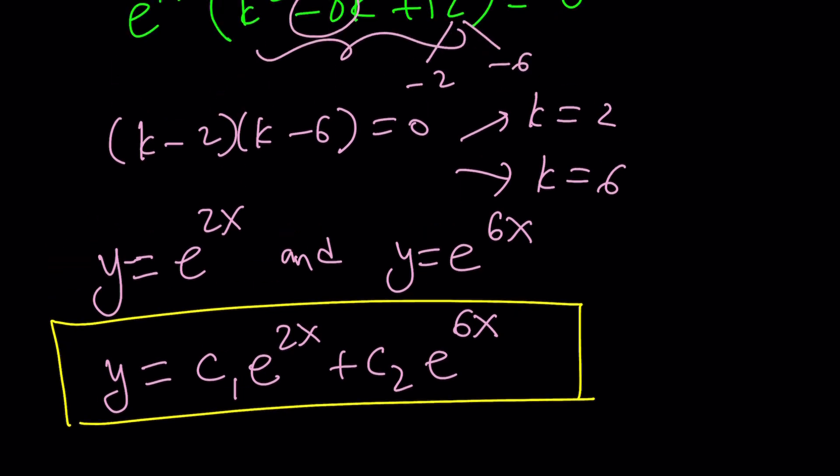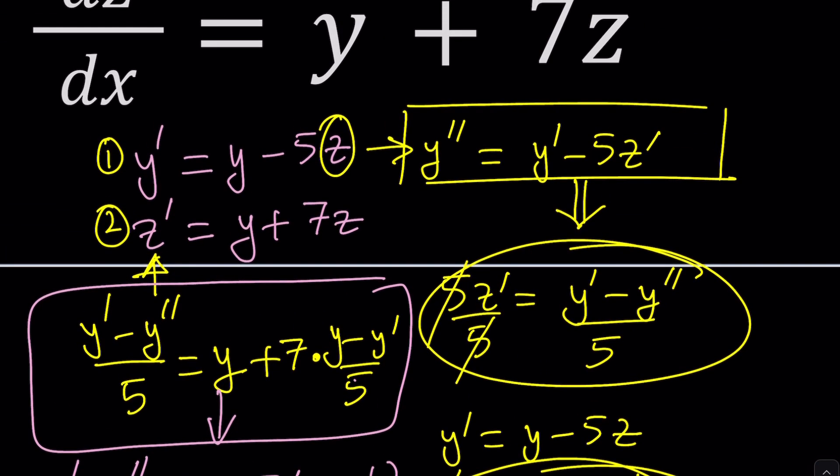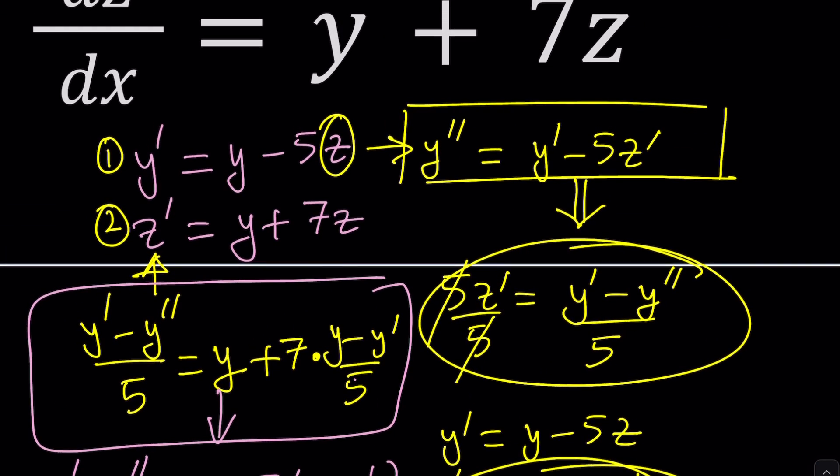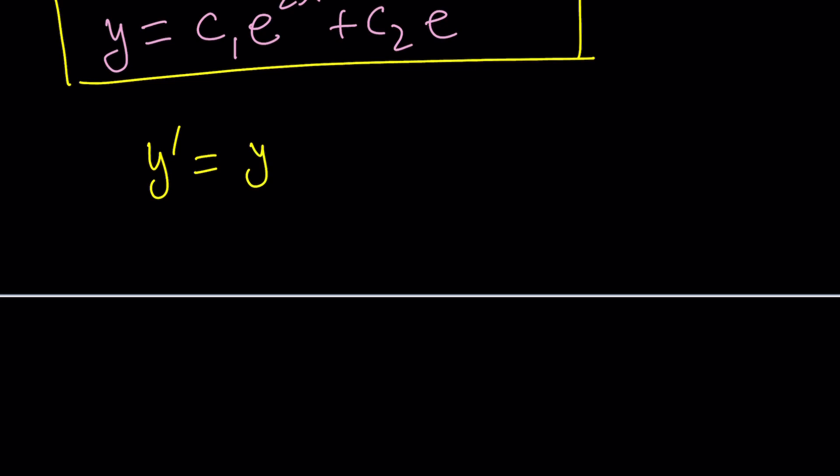But that wouldn't be too hard, because if you think about it, there's a relationship, right? Like, for example, if you look at the first equation, we have y prime and y. Let's go ahead and rewrite the first equation. We have y prime is y minus 5z.